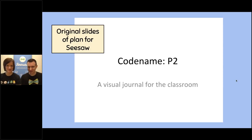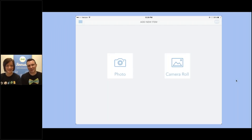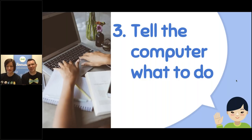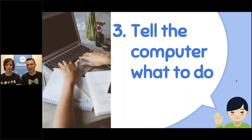The original code name for Seesaw was P2, and the way we talked about it at that time was a visual journal for the classroom. Seesaw doesn't look like this anymore, but all you could do was post a photo or select a photo from the camera roll and post it into your journal. That's really a good indication of where to start — you want to start somewhere simple. You don't want to get too complicated too quickly.